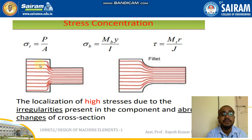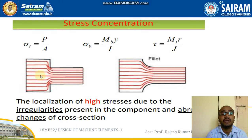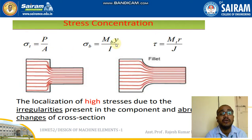Here you can see a component where there is a change of cross-section. Consider part 1 and part 2 — the cross-section is the same throughout, but suddenly there is a change of cross-section at one location. For example, if a tensile load is applied on this component, you can see that where the cross-section is uniform there is no problem, but when there is a change of cross-section, the load is distributed according to the shape. At that particular point, stress starts to accumulate. We know that for tensile stress it is P/A, for bending it is M·b·y/I, and for shear it is M_T·r/G. The stresses will be concentrating only where there is a change in cross-section.